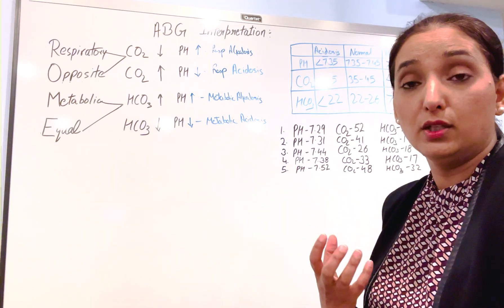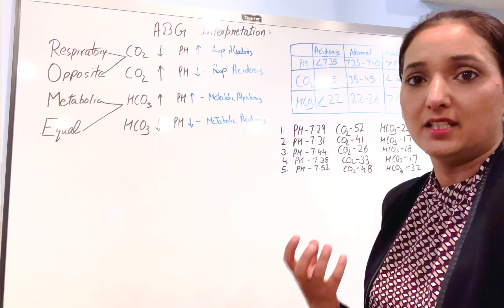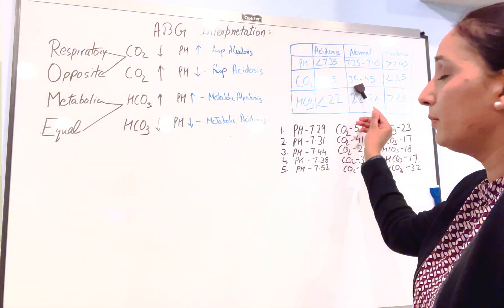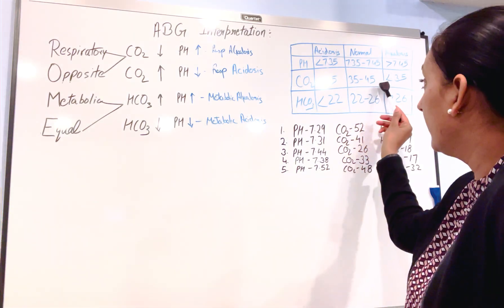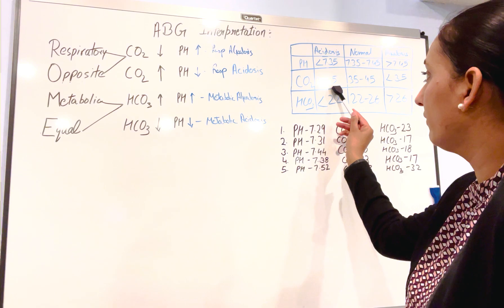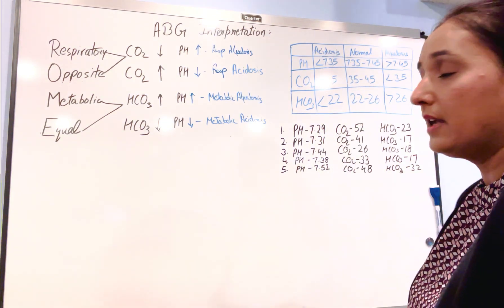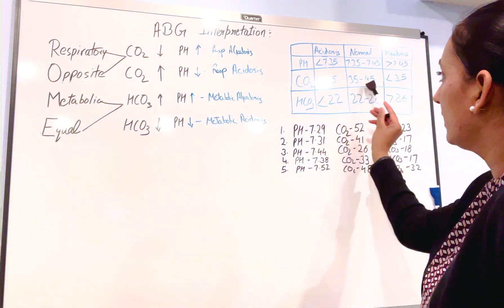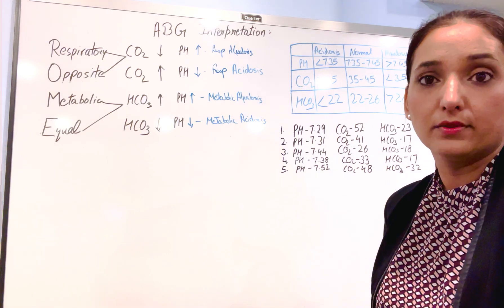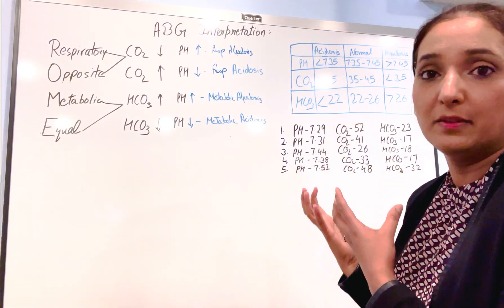The more carbon dioxide in your blood, the more your body is going into acidosis. The normal value of carbon dioxide is between 35 and 45. If it's higher than 45, that means your body is going into acidosis. If it's less than 35, that means your body is going into alkalosis.